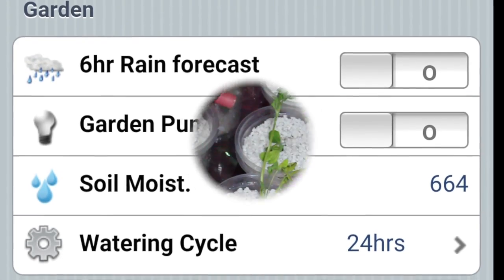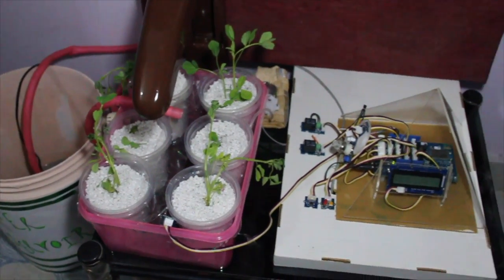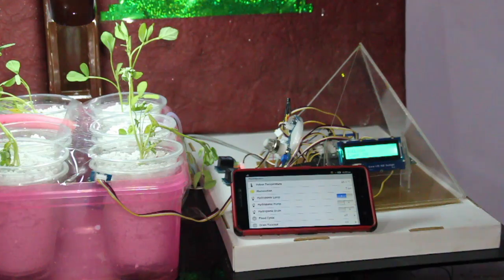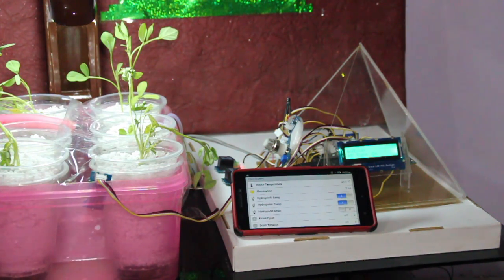For indoor gardening, we have a control pump supplying nutrient mix to a DIY farm. A water level sensor detects the level and the drain pump is used to empty the tray.